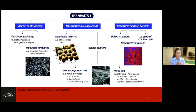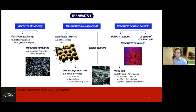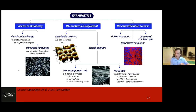Whether these oleogel approaches are edible, allowed by regulators, cost effective, or have the required rheological properties — those remain big challenges. You can also have structured biphasic systems: gel emulsions or structured emulsions. We've worked a lot with monoglyceride gels — monoglyceride mesophases that trap oil and are dispersed in water — and they look like fat. Or indirect oil structuring via solvent exchange, emulsion templates, or foam templates using polysaccharides to physically trap oil. Lots of options — but what about giving another option: glycerolysis?